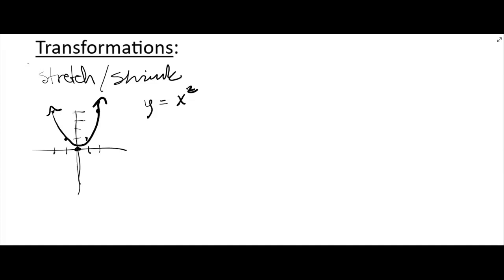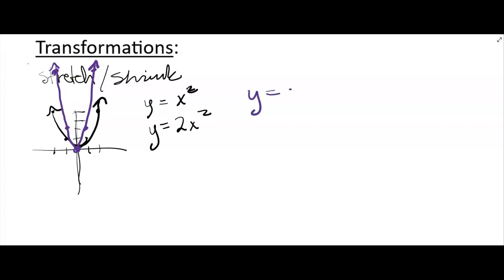Now when we stretch it — so let's say we go y equals 2x squared — then all those outputs double. So when you put in negative 2, instead of going up 4, you're going to go up 8. You're going to get a new set of points that are twice as high. Instead of going to 1, you're going to go to 2. Now, 2 times 0 is 0, so the vertex stays put, and then it's a mirror image on the other side. You get this parabola that's stretched. That's what happens when, in the form y equals ax squared, a is greater than 1 — you're going to get a stretch.